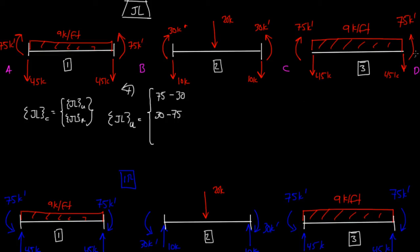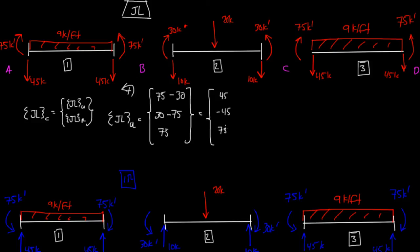And then finally at D, we have a positive 75 kip-foot moment. So this becomes, if I solve this out: 45, negative 45, and then 75. These are kip-foot because they're all moments.